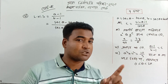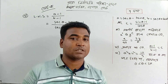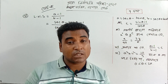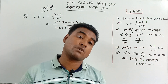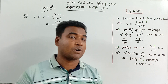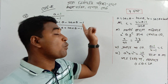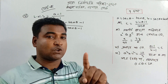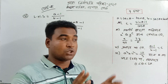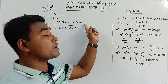We know that sin squared theta plus cos squared theta equals one, and sec squared theta minus tan squared theta equals one. So how much is it? We have 1 times 1.